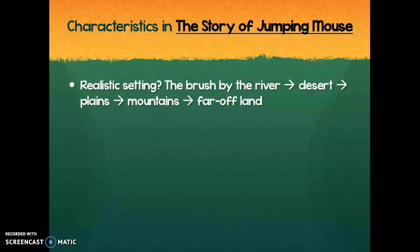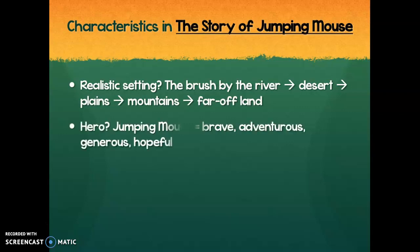Let's take a closer look at the story of Jumping Mouse. Is there a realistic setting? Yes. All the places mentioned are real places you would find on our planet. The mouse lives in the brush by the river; it talks about him going through the desert, the plains, the mountains, all the way to the far-off land. Even the far-off land with its waterfalls, trees, and plants is all stuff we see on our planet — very possibly in North America.